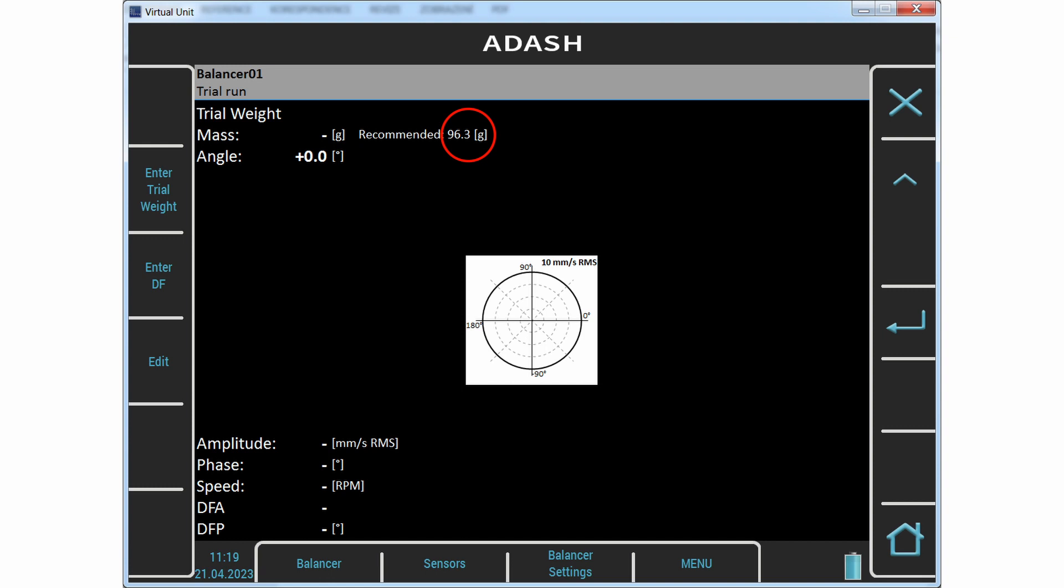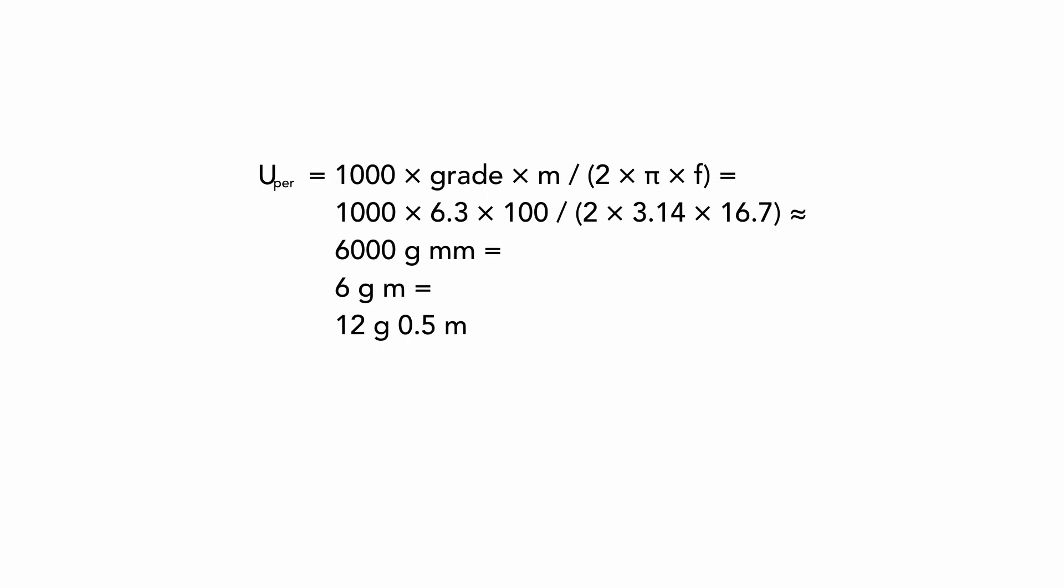Now we should mount the trial mass. The recommended trial mass is 96.3 grams. I have the 100 grams mass and I will use it. How does the instrument get that value? You can see the formula for U-per. It is permissible residual unbalance. It is 12 grams on half meter radius. We use trial mass, which is 8 times higher.